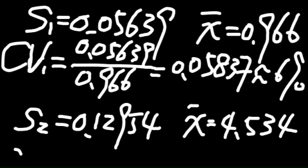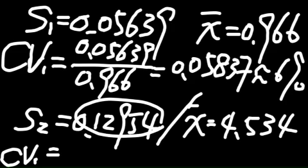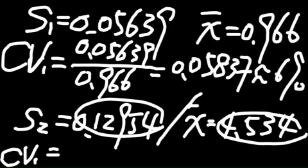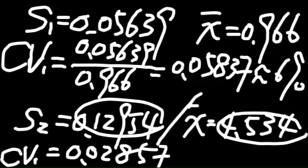And the second CV, if you use this one to divide it by this one, then you get 0.02857, around 3%.